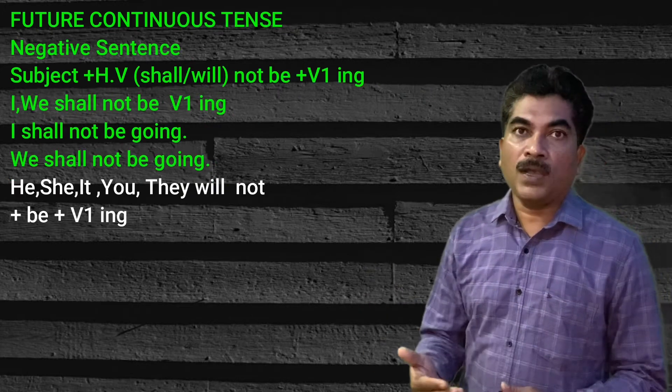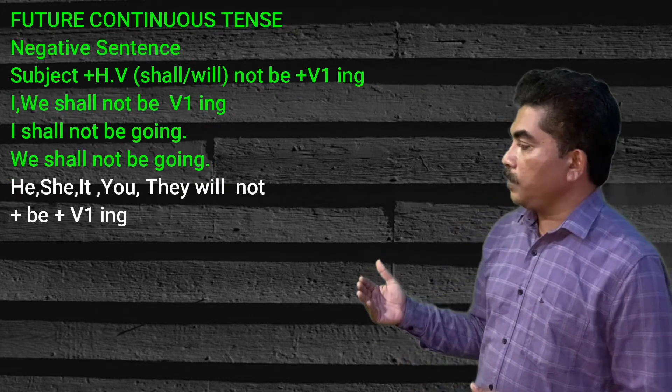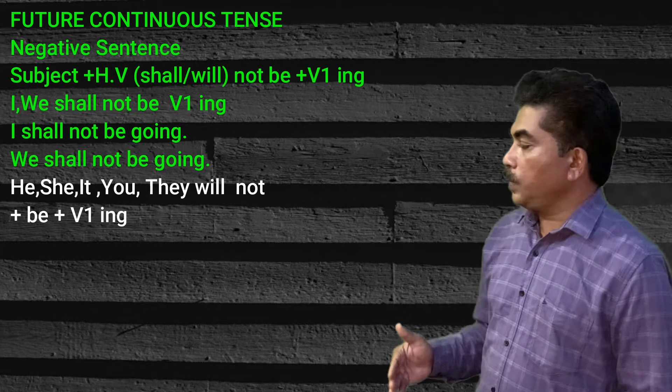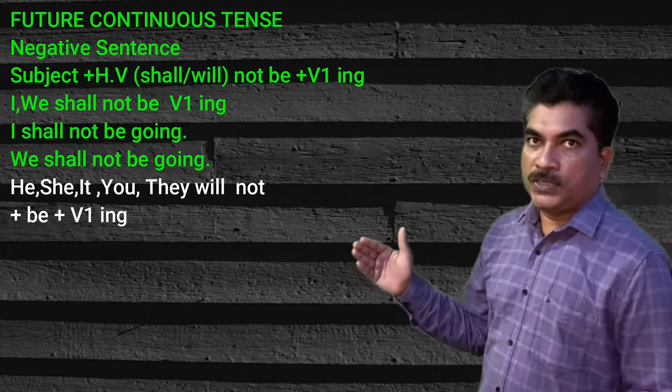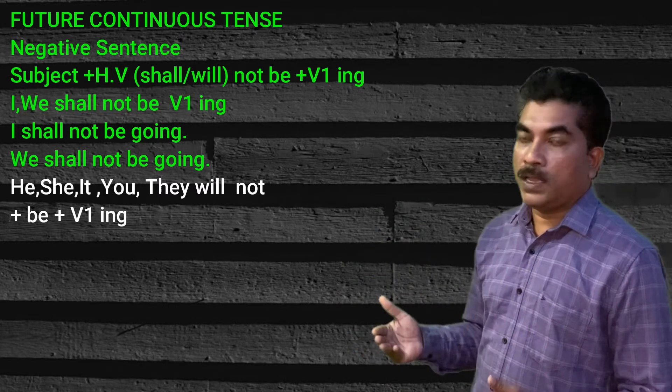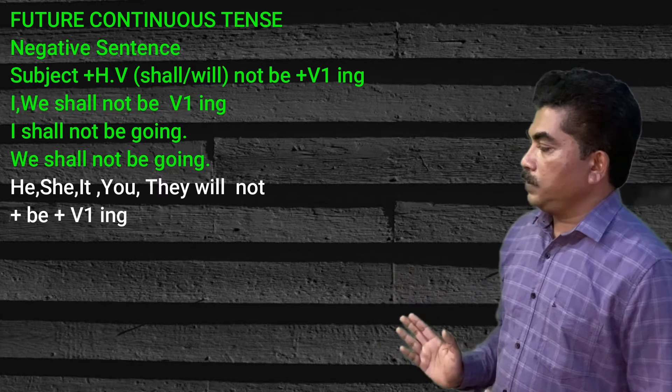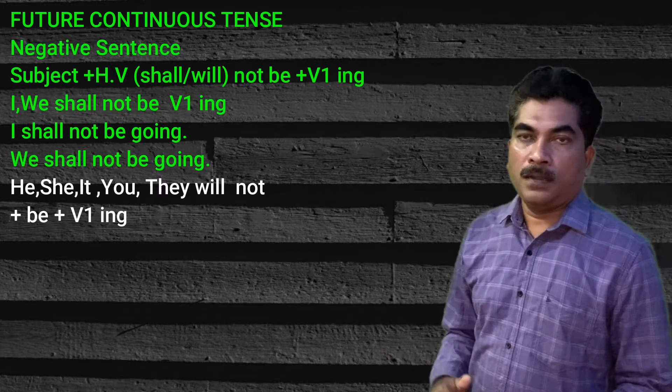Subject I or we, for example. If the subject is he, she, it, they, or you, we use 'will not'.